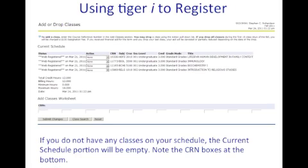If you don't have any classes on your schedule, this page will be pretty empty when you get to it, besides the CRN boxes on the bottom of the page. If you are in a learning community, you should already have a couple of classes you are registered for, so you don't have to worry about those. Once you are registered for some classes, you can choose to drop them by clicking the Action Pull Down menu.